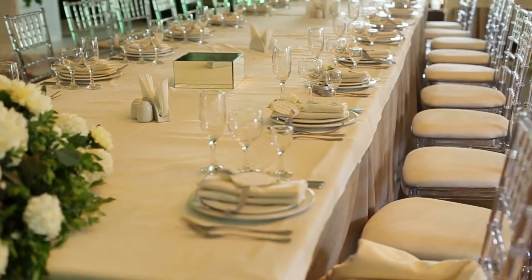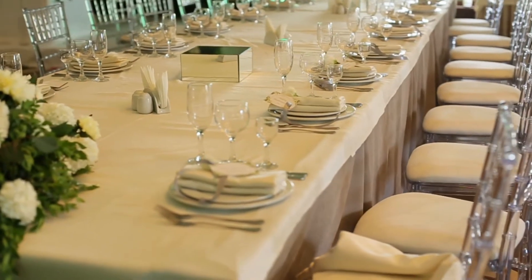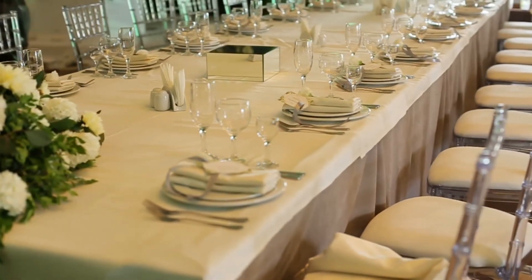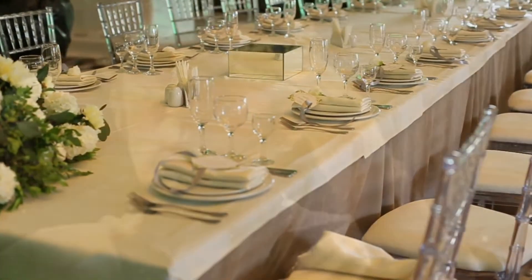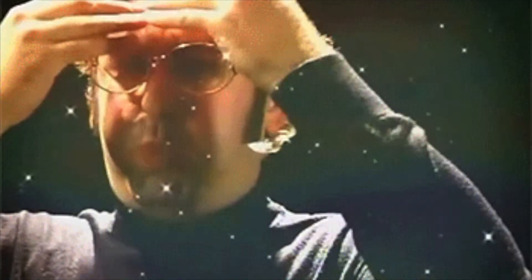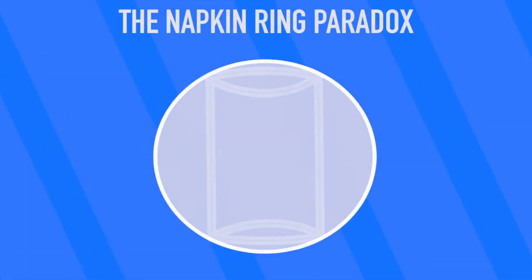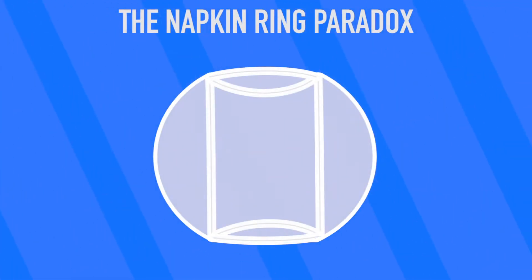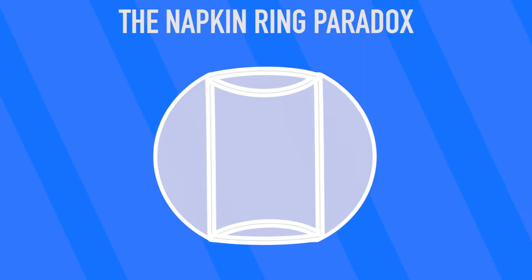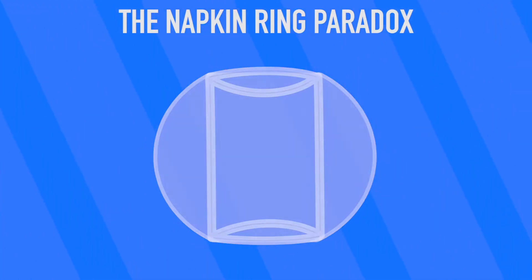Napkin rings — probably the last objects on Earth that you would expect to completely blow your mind today. But get ready, because they're about to. When you core a sphere with a cylinder, you're left with an object that looks like a napkin ring of a certain height.